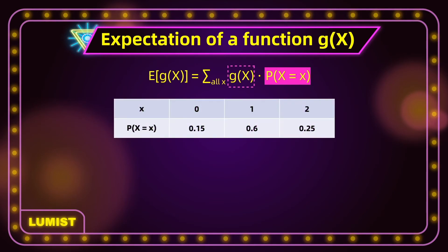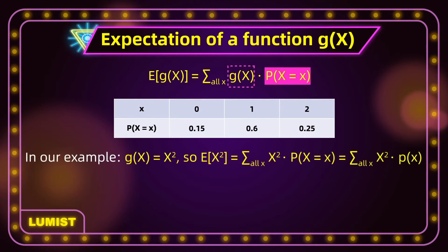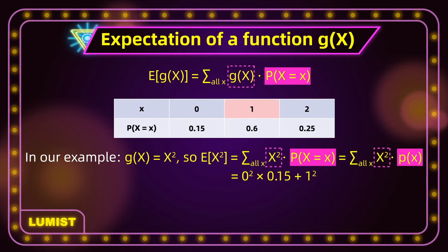We're going to use the same distribution as before. Since g(x) is equal to x squared, the expectation of x squared is going to be the sum of all x squared for all the x's in the distribution, multiplied by their corresponding probabilities. That gives us: 0 squared times 0.15, plus 1 squared times 0.6, plus 2 squared times 0.25. When we calculate this, we get 1.6. So the expectation of x squared in this case is 1.6.